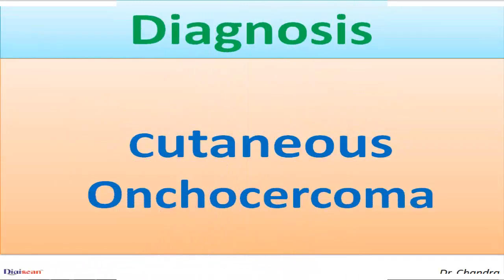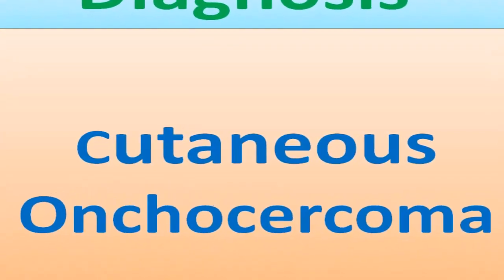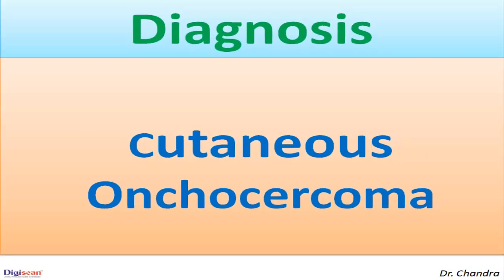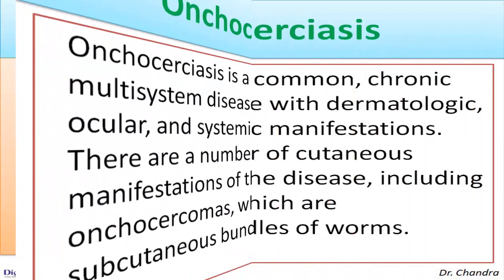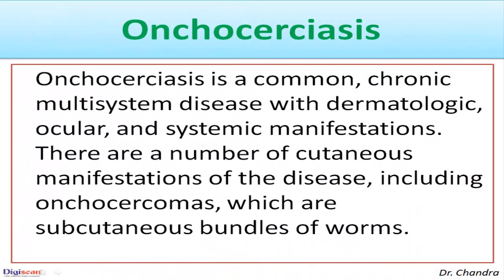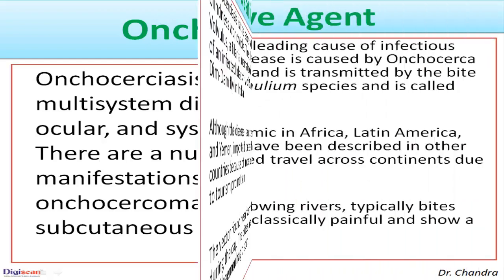Based on these morphological findings, a diagnosis of cutaneous onchocerciasis was made. Onchocerciasis is a common chronic multi-system disease with dermatologic, ocular, and systemic manifestations. There are a number of cutaneous manifestations of the disease, including onchocercomas, which are subcutaneous bundles of worms.